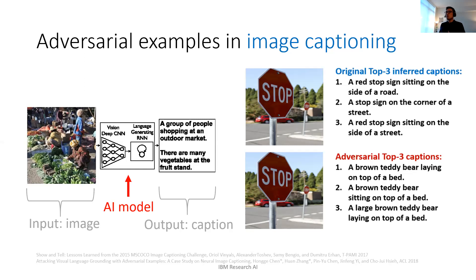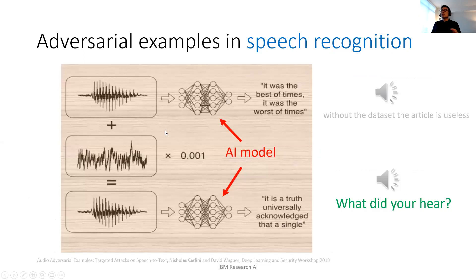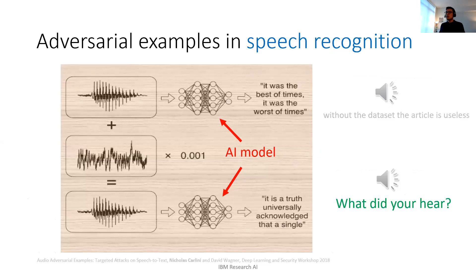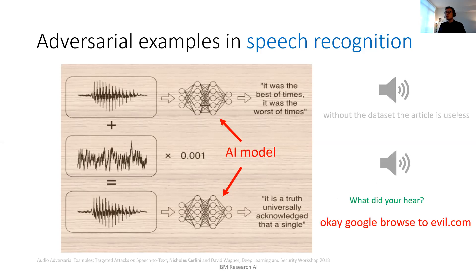Another example is audio adversarial examples, where you add perturbations to an input audio file to change the transcribed result. The original audio says 'Without the data set, the article is useless.' The adversarial version sounds similar to a human, but the actual targeted output is 'okay google browse to evil.com.' This is the concept of hidden voice commands — humans hear similar audio but machines pick up a different message and take actions without your notice.